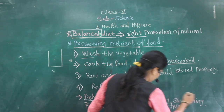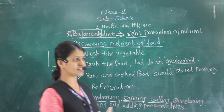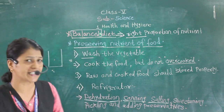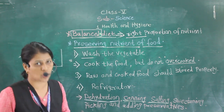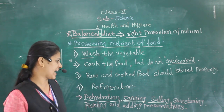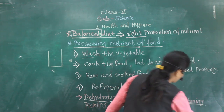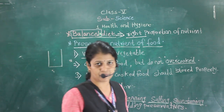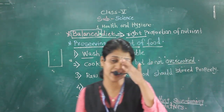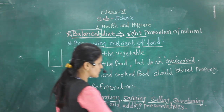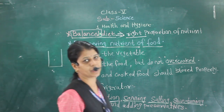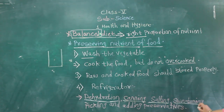Next is salting. Your mother might have prepared pickles during summer vacation — she adds a large amount of salt. That is called salting, and you can preserve the food for a longer period of time. Then next is sweet meat. For example, jam is sweet. More amount of sugar is added to preserve the food from germs. That process is called sweet meat.